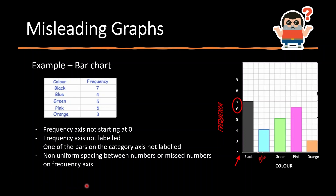This is one example to show what kinds of mistakes we tend to make. If you look at this bar graph, the frequency axis — the Oy axis — is not starting at zero; it's starting at two. Always remember that it should start at zero. Another mistake is that the frequency axis was not labeled, and the category axis (x-axis) was also missing its color label. Another major mistake is non-uniform spacing — here some bars have two squares of space between them, but one section has only one square. We need to be very careful not to make these types of mistakes when drawing graphs.